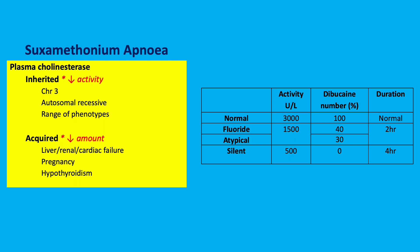Abnormal genes include the atypical, silent, and fluoride variants. The amount of enzyme activity is quantified by the dibucaine number. Dibucaine is a local anaesthetic that acts as an inhibitor — you add the inhibitor to the enzyme and the degree of inhibition relates to the duration of action. Significant inhibition results in severe disease and the patient will have prolonged apnoea following exposure to suxamethonium.